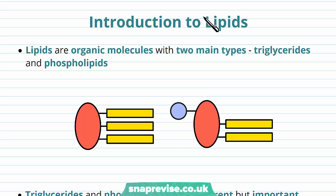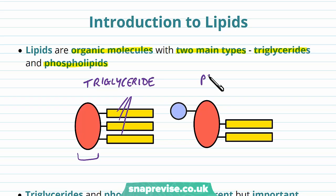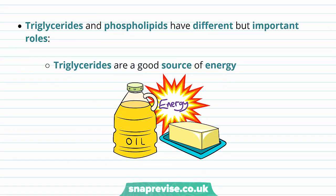Lipids are another family of very important organic molecules which we use in the body. They're organic molecules because they contain a lot of carbon, like proteins and carbohydrates. Lipids come in two main types that we find in the body: there are triglycerides and there are phospholipids. A triglyceride normally looks like one molecule with three parts coming off at the end, while a phospholipid has a distinguishing phosphate group on the end.